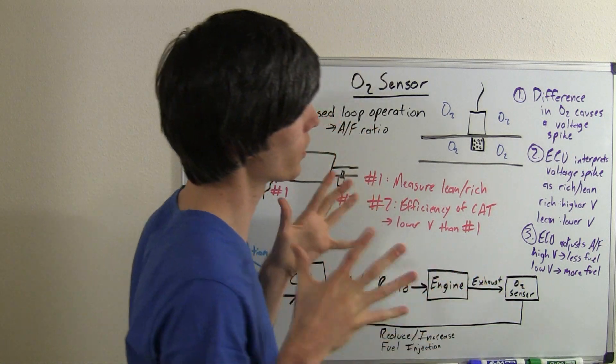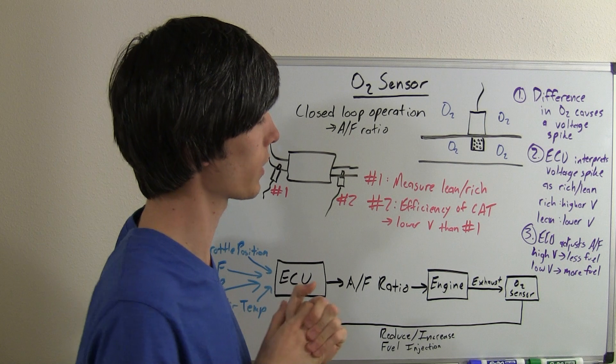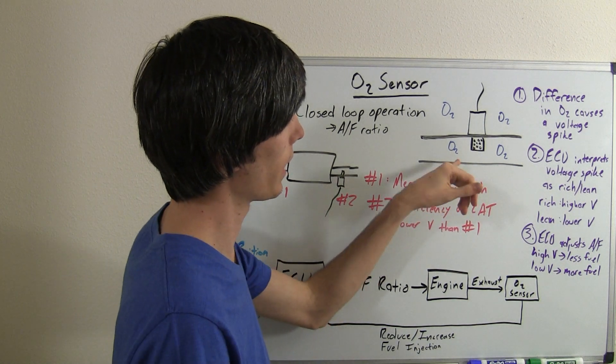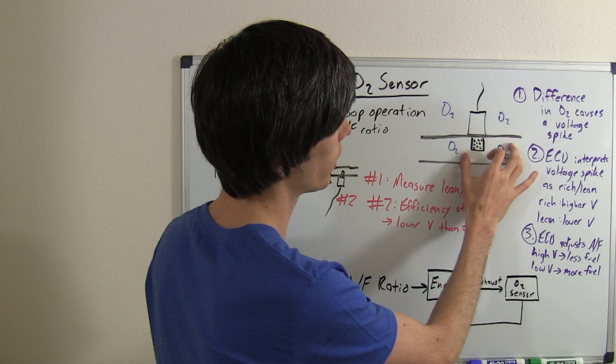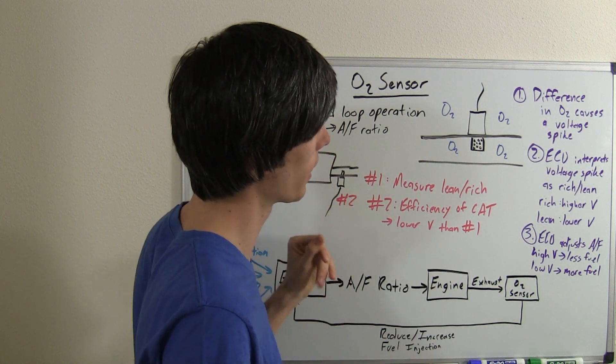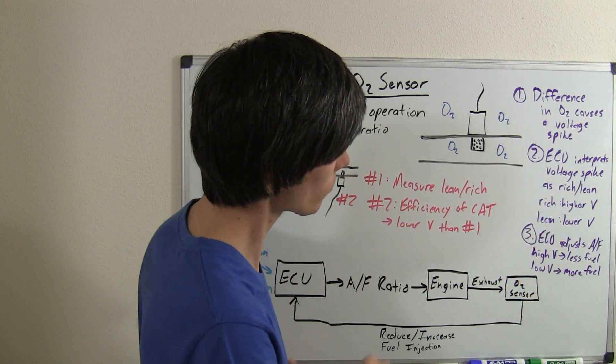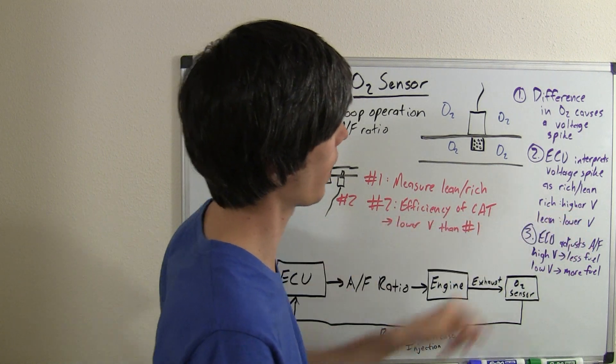The ECU interprets this voltage difference as a rich or lean air-fuel mixture. For example, if there's not any oxygen in here and there's plenty of oxygen outside, there's going to be a larger voltage spike and the ECU will read this as rich. If it's rich, you'll have a higher voltage.